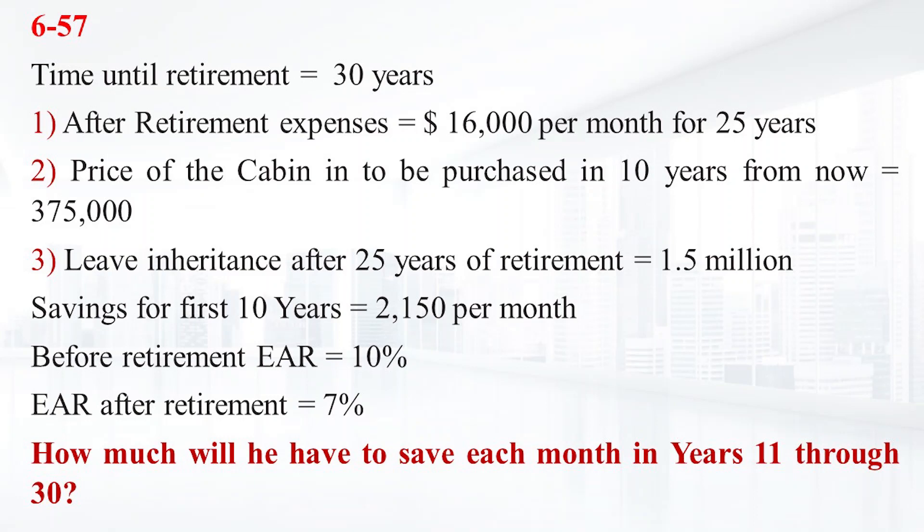Bilbo Baggins wants to save money to meet three objectives. First, he would like to be able to retire 30 years from now with a retirement income of $16,000 per month for 25 years,